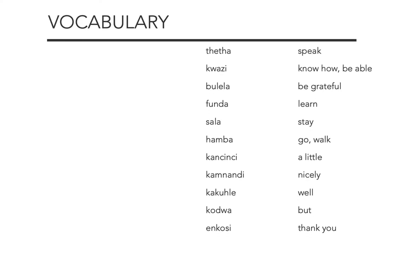I like to start with the verbs because I think they are the most important part of vocabulary. If you want to memorize and learn one thing, I would suggest you memorize the verbs — they'll get you the furthest the quickest. First we have teta — speak. Notice if there is an H in the written form that the consonant is aspirated, so you have to hear that H: teta. Then we have kwazi — to know how, or to be able to. Kwazi. Bulela — to be grateful. Funda — to learn, or to read, or also to study.